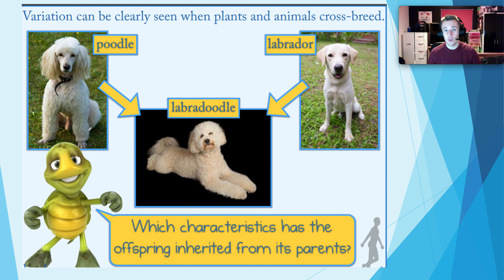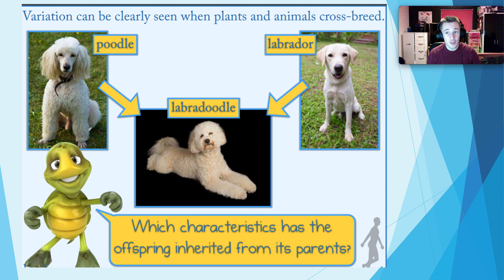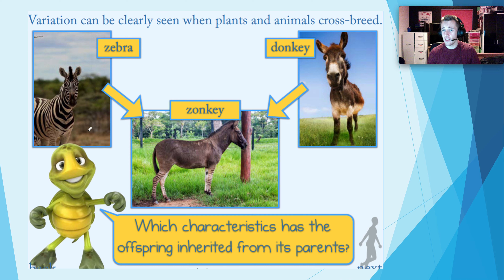Variation can easily be seen when we have what's called a crossbreed — that's most easy to explain with dogs. So for example, you take a poodle and a labrador and it makes a labradoodle. You can see the variation because it's inherited some things very clearly from the poodle and some very clearly from the labrador, but not all of them — and that's where you can see the variety happening. Same if you take a zebra and a donkey, you get a zonkey.